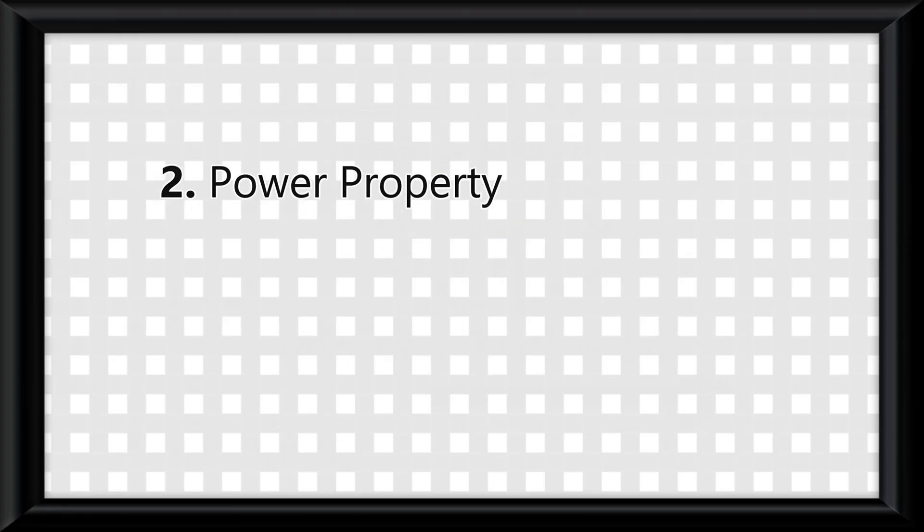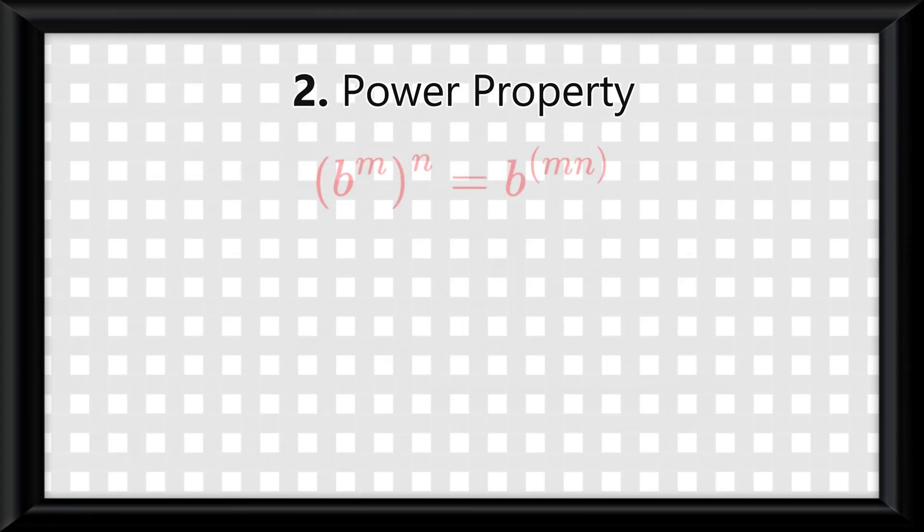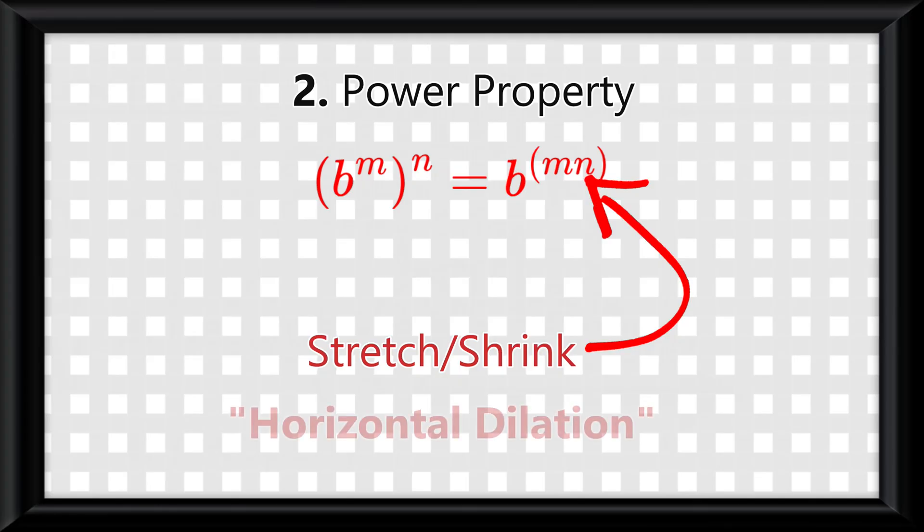The second property is the power property, which says that b to the m to the power of n is equal to b to the mn, meaning if you have double exponents, you are simply multiplying the exponents together. What this does to a graph is it functions as the stretch or shrink value, meaning it is the horizontal dilation.